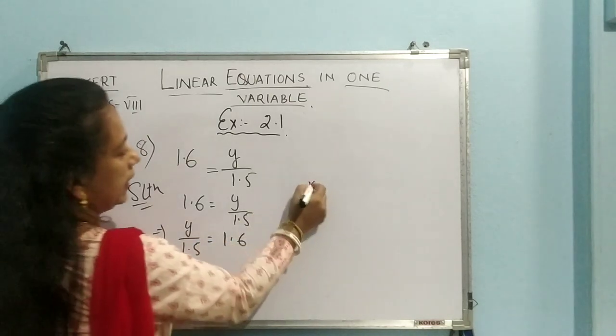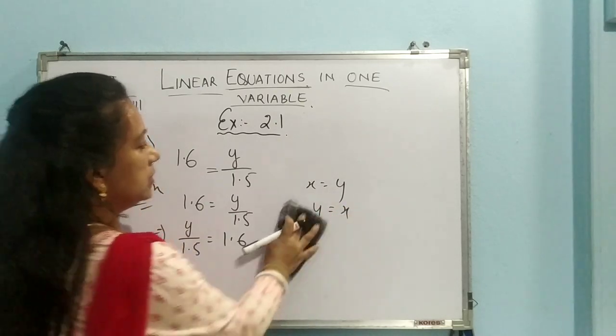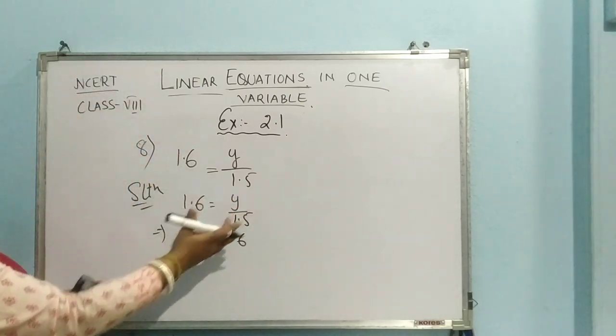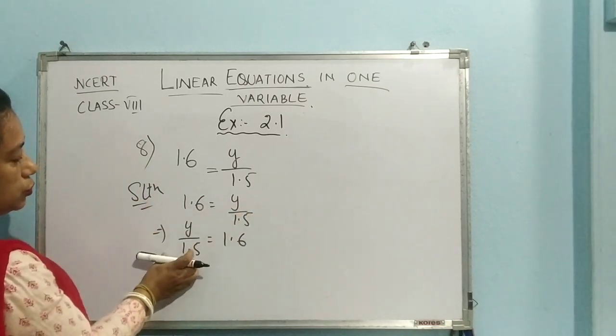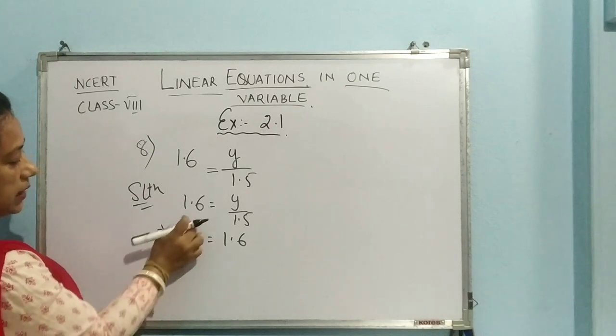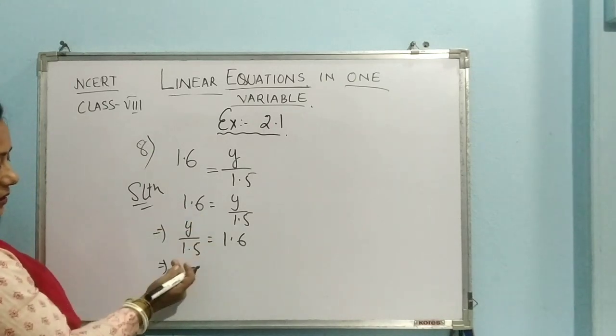So I can write it like this. y by 1.5 is equal to 1.6. Same thing only. x equal to y can be written as y equal to x. I am just changing their sides. As a whole. It doesn't mean that there will be some changes in the sign. I have just written this portion here and this portion here. Why? Because I need the value of y. That's right.